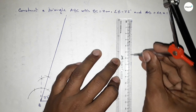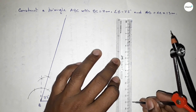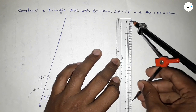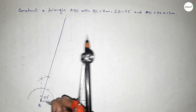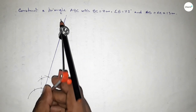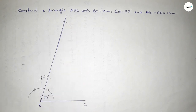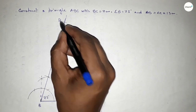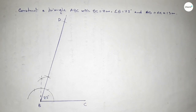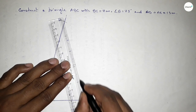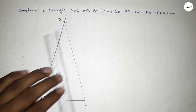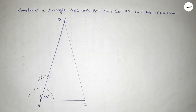Now taking a line of length 13 centimeters using the compass. This is 13 centimeters — placing the compass here and cutting to mark point D. Then joining C and D.